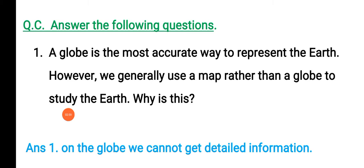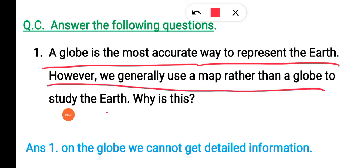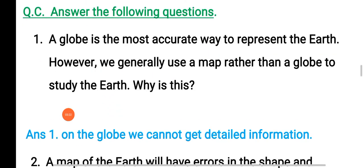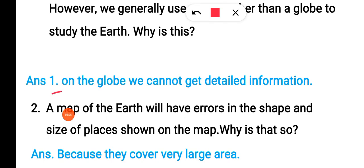Answer the following questions. A globe is the most accurate way to represent the Earth. Then why do we generally use maps rather than globes to study the Earth? Why is this? The question is saying that globe is an accurate model, then why do we use the map? The answer is: on a globe we cannot get detailed information. That is why we are using maps.